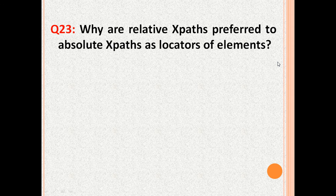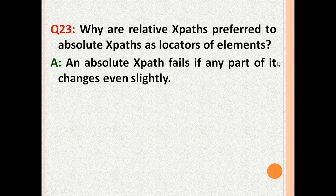Why are relative XPaths preferred to absolute XPaths as locators of web elements? The reason is that an absolute XPath fails if any part of it changes even slightly.